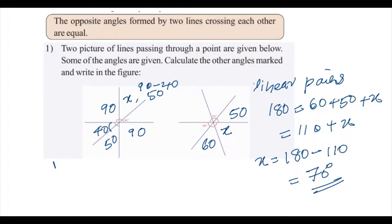Since x is 70 degrees, the opposite angle is also 70 degrees. That gives us all the angles for this diagram.